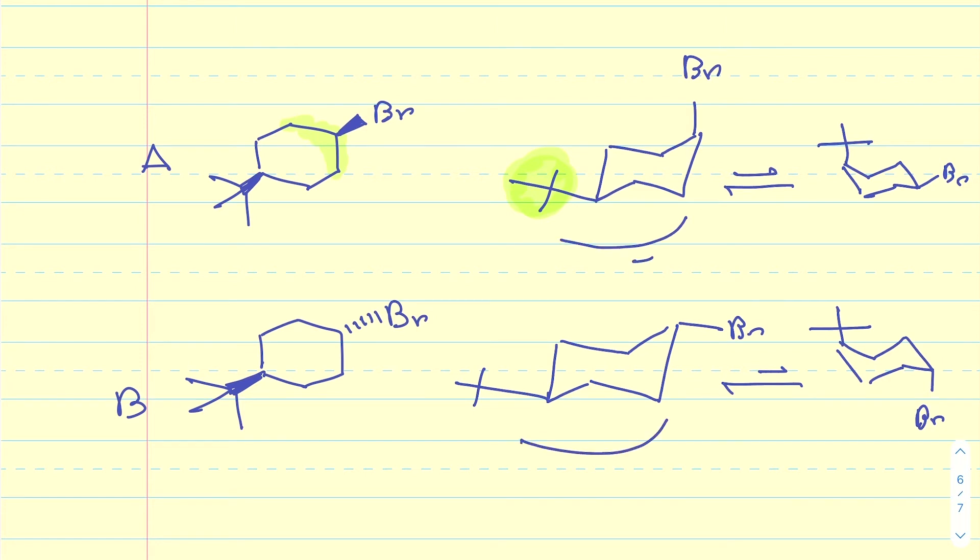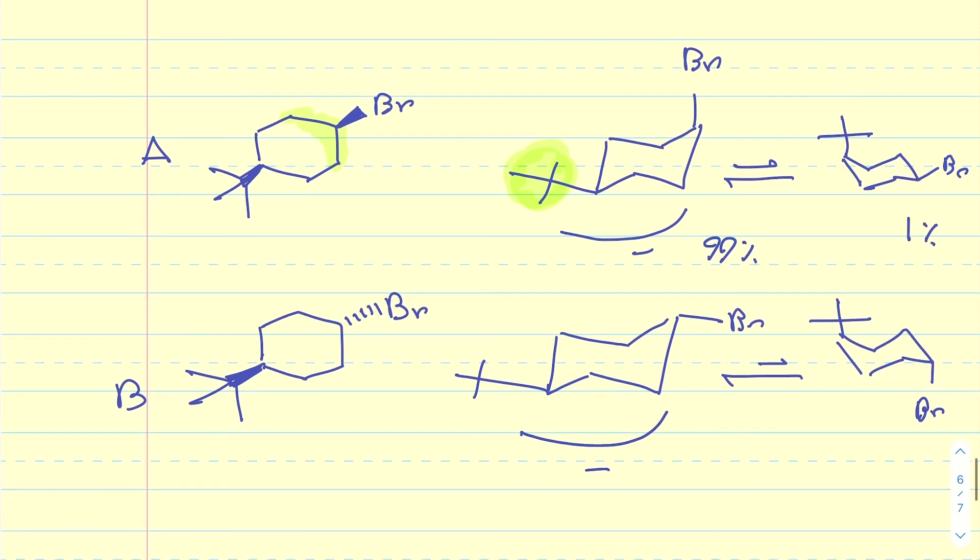So obviously this is the more stable conformation for this compound. And this is the more stable conformation for compound B, meaning that at any given time, out of every 100 molecules, and I'm making up these numbers, but it's something of this order. Say 99% of our molecules are in that conformation, 1% of molecules are in that conformation. And for B, say 99% are in this conformation, 1% are in this conformation.